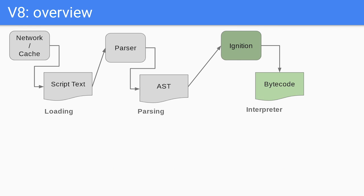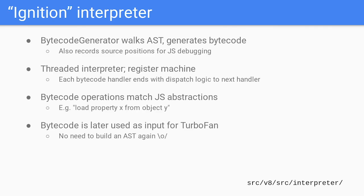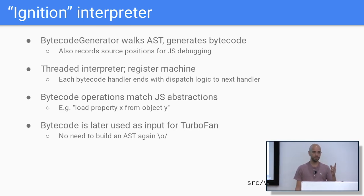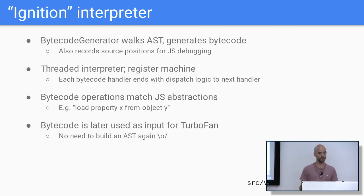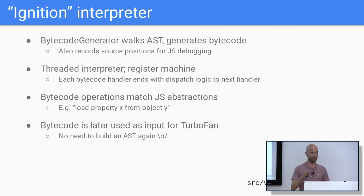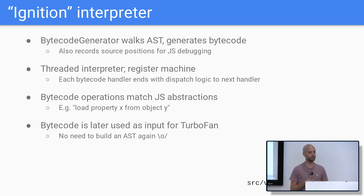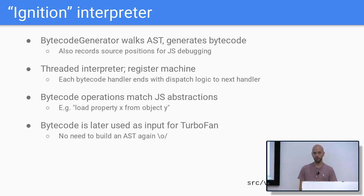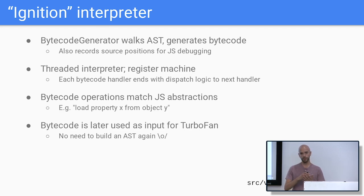We then move on to the interpreter, called Ignition. The AST is fed as input to the bytecode generator, which generates a stream of bytecodes. These bytecodes get executed one at a time by the interpreter. V8 has an indirect threaded interpreter with a large table of handlers keyed by bytecode — we look up the bytecode, find its handler, jump to it, and execute. The interpreter has registers that function similarly to machine registers but live on the stack. Bytecode is the source of truth for the interpreter, our optimizing compiler TurboFan, and DevTools, meaning we can discard the AST once bytecode is generated.